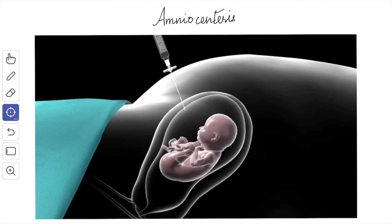Next, we will see about amniocentesis. Aspiration of the amniotic fluid, known as amniocentesis, is performed through the cervix or the anterior abdominal wall. This procedure is adopted to investigate the nuclear sexing of the fetus in some sex-linked diseases. Enzyme estimation of the fluid and other chemical tests may be helpful to diagnose gross fetal malformation.